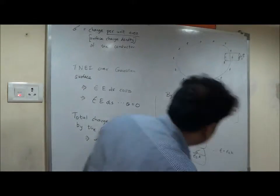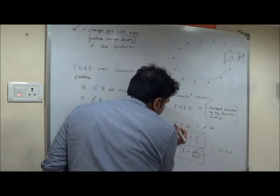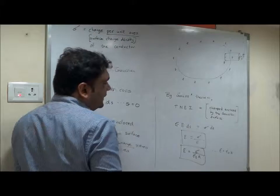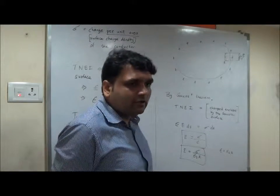Sorry, this is epsilon. So epsilon will take down, DS gets cancelled, E equal to sigma by epsilon.